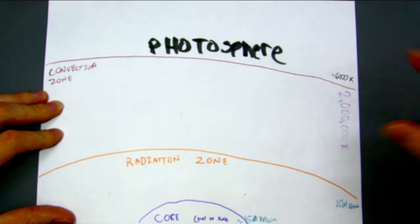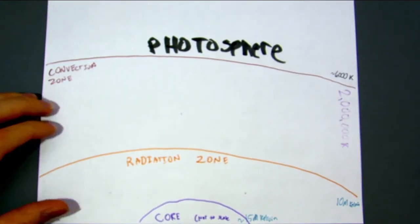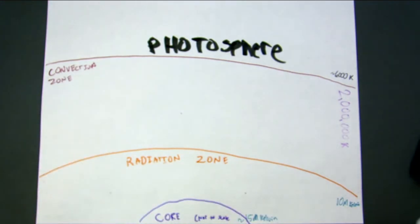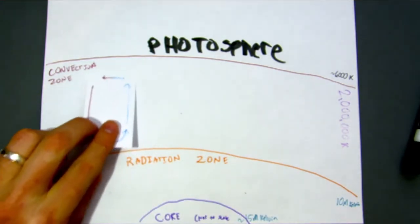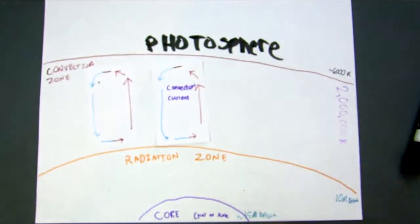So obviously the whole layer isn't 2 million Kelvin. It gets hotter as you get lower and it gets cooler as you get higher. And in fact, that is why it is called the convection zone because inside the convection zone, we have these convection currents going on in there.